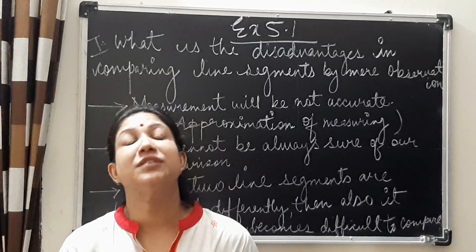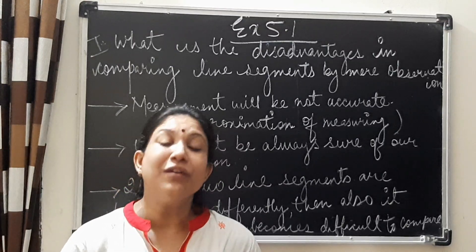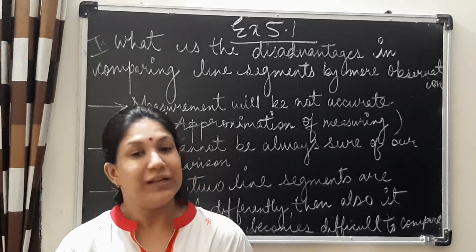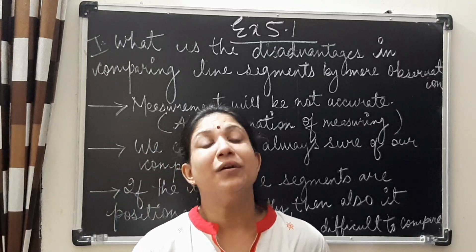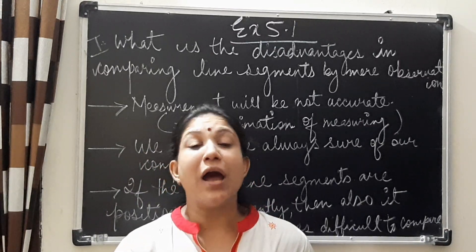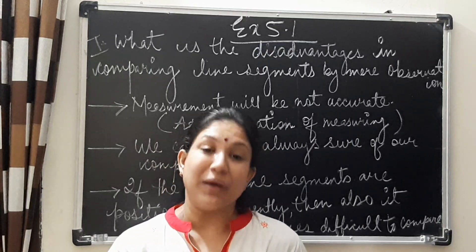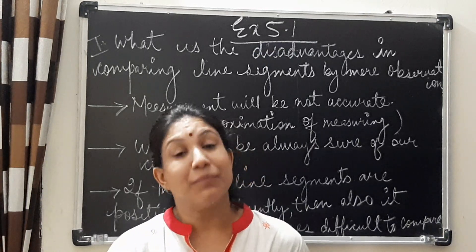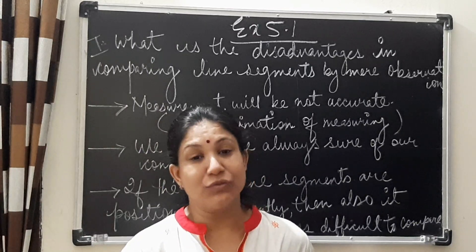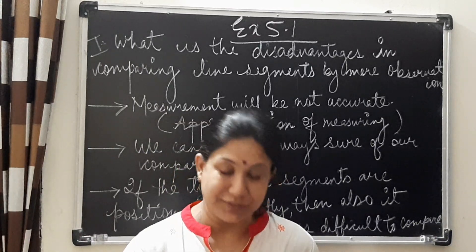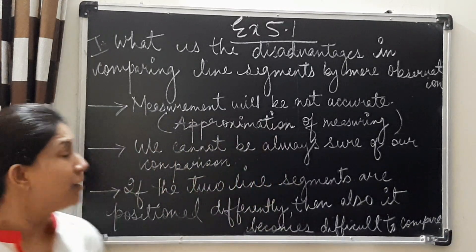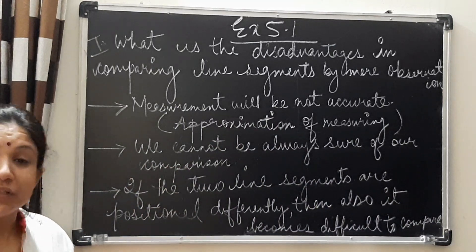How do you overcome these disadvantages? By using ruler or divider. That is not asked in the question, but if it is given, how can you overcome these problems? We can overcome these problems by using some correct method. That is, by using ruler or divider. So you can copy the solution for the first question.